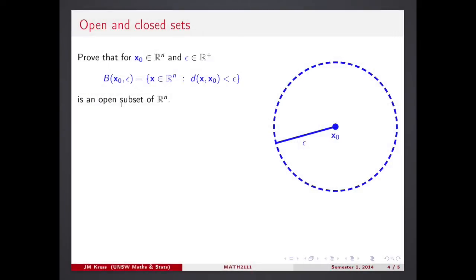Here's the argument. So you see if you take a ball B(x0, epsilon), that's the definition of this ball. The claim is this is an open set. That's what we do.